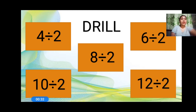4 divided by 2 equals 2, 6 divided by 2 equals 3, 8 divided by 2 equals 4, 10 divided by 2 equals 5, and 12 divided by 2 equals 6. All together: